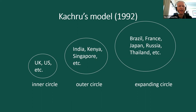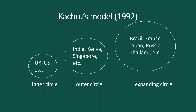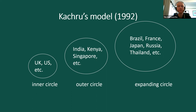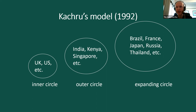Here is Kachru's three circle model, which shows the spread of English. There is the inner circle, where English is used as a first language in countries like the UK and the US. Then there is the outer circle, where English is used as a second language in countries like India, Kenya, and Singapore — in these countries they use English alongside local languages.